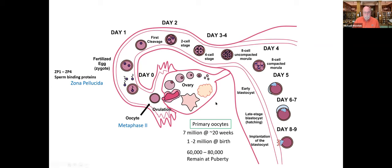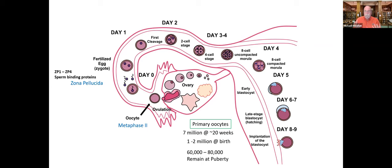Amazingly, in human females by about 20 weeks of development, the ovaries have formed and contain about 7 million primary oocytes. The rest of your life, you continue to reduce that number. By birth, these have been culled down to about 1 to 2 million, generally through reabsorption processes — not ovulation, since you're not prepared for that.